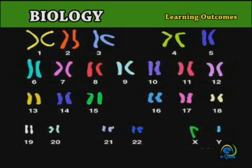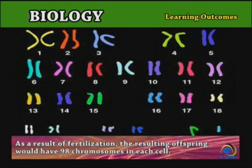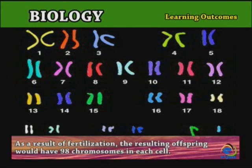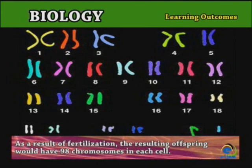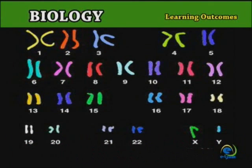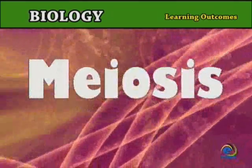Can you imagine what would result if gametes contained 46 chromosomes? As a result of fertilization, the resulting offspring would have 92 chromosomes in each cell. Furthermore, the number would keep on doubling with each successive generation. For this reason, a process by which the chromosome number is halved and chromosomes are sorted and packaged to be passed on to an organism's offspring is carried out. This process is called meiosis.